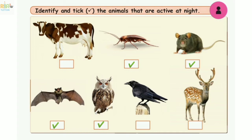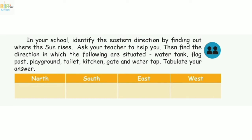In your school, identify the eastern direction by finding out where the sun rises. Ask your teacher to help you. Then find the direction in which the following are situated: water tank, flag post, playground, toilet, kitchen, gate, and water tap. Record your answer.